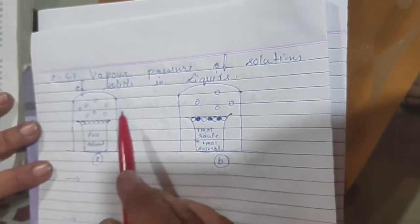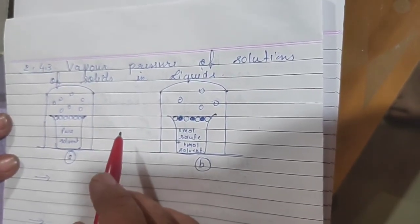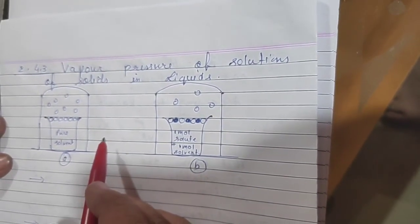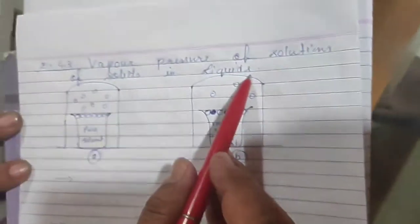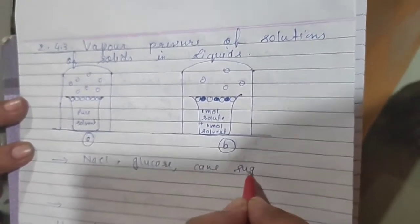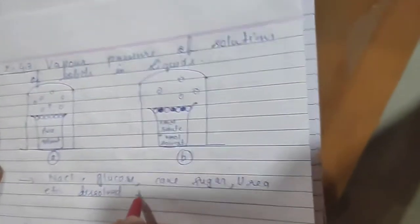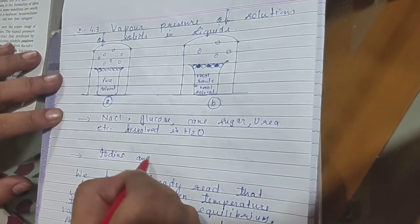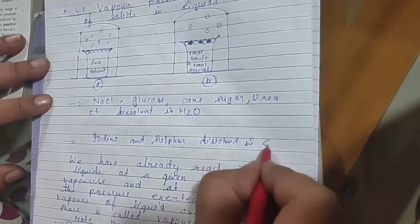So far we have read about solutions of two volatile liquids in a binary solution. Now we will read about solutions of solids dissolved in liquids — vapor pressure of solutions of solids in liquids. Examples include NaCl (common salt), glucose, cane sugar, urea dissolved in water, and also iodine and sulfur dissolved in carbon disulfide (CS2).